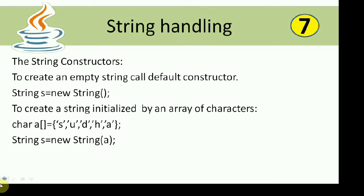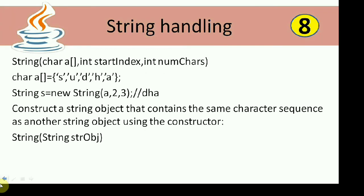To create a string initialized by an array of characters, declare a character array — for example, char a = {'S','u','d','h','a'} — and pass a as an argument to the String constructor. This creates the string 'Sudha'. There is also a constructor that takes a character array with a start index and a numChars parameter — start index provides the starting position, for example index 2 means starting from 'd', and numChars specifies how many characters to include.